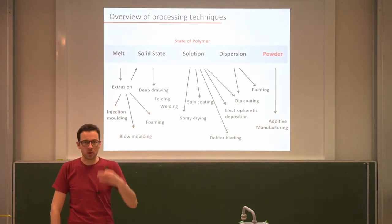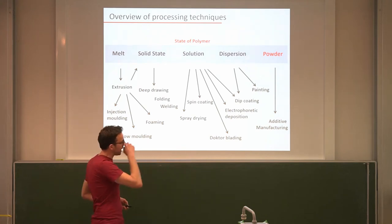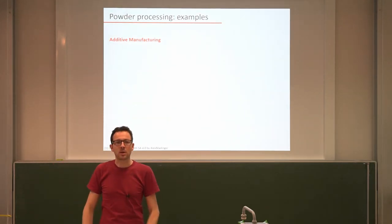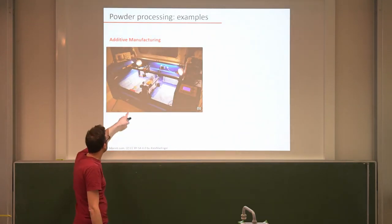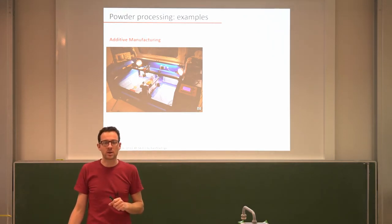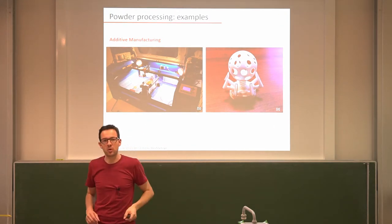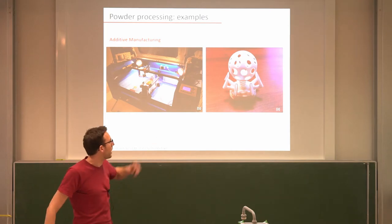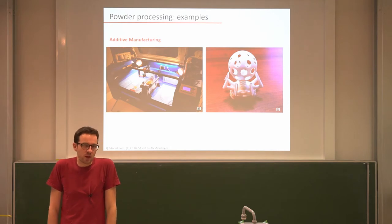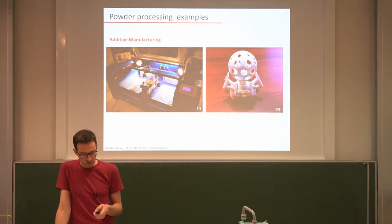We also saw that we can process powders — the polystyrene or styrofoam example from last week's lecture. Here I picked a different example: additive manufacturing, specifically selective laser sintering. You have a polymer powder in a building chamber, you heat with a laser at certain areas to fuse powder particles together, and build your material in a layer-by-layer fashion to create a very complicated, customized object. These processes are widely used or very promising aspects of polymer fabrication.